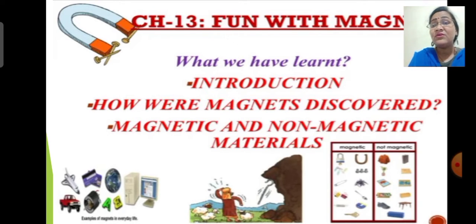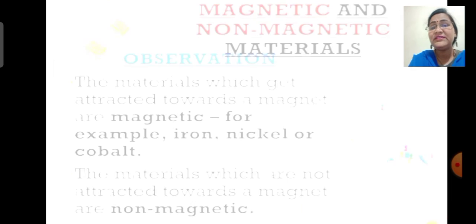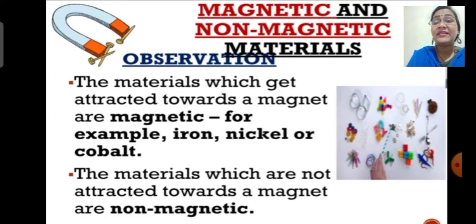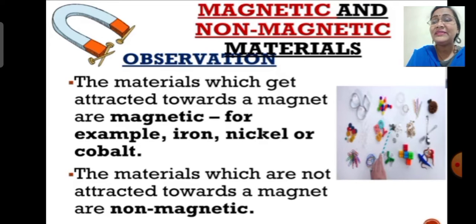So children, what are magnetic materials? If a magnet is capable of attracting materials towards it, then those materials are magnetic materials. Examples: nickel, cobalt, steel, brass, etc. are magnetic materials.